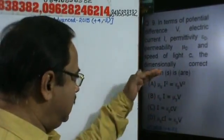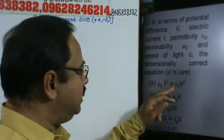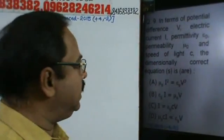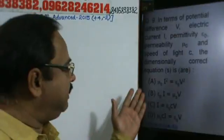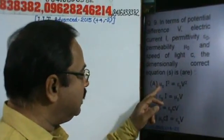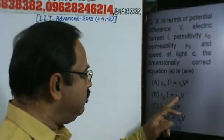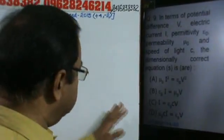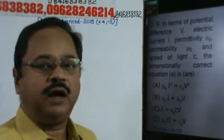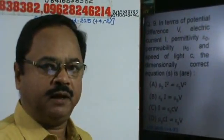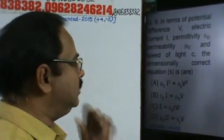There are more than one options. One of the options is mu naught I square equals epsilon naught B square. To solve this in objective mode, the shortcut approach is: first find the dimensions of mu naught and epsilon naught in terms of V, I, and other given quantities, then check each option.